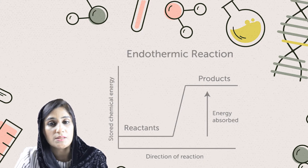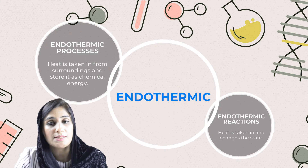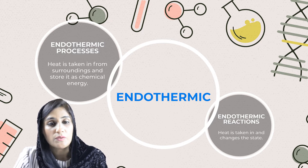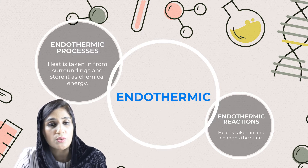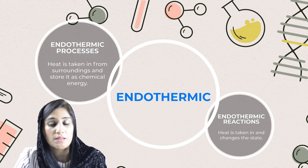Endothermic is composed of two types: endothermic process and endothermic reaction. In an endothermic reaction, heat energy is taken in from the surroundings and is stored as chemical energy. Whereas in an endothermic process, heat energy is taken in but the change is due to a physical reaction or a physical change.